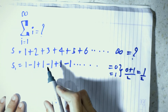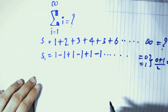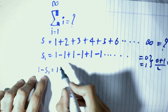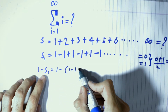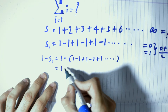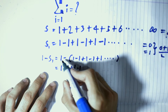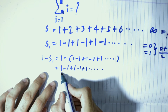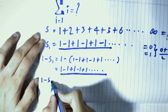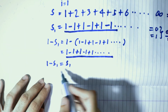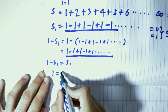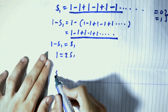Don't worry if you don't believe that 1 minus 1 plus 1 minus 1 and so on equals 1 by 2, because we can prove it. We write 1 minus S1. S1 was 1 minus 1 plus 1 minus 1 plus 1 and so on. Opening the bracket, we get 1 minus 1 plus 1 minus 1 plus 1 minus 1 and so on, which is S1 itself. So 1 minus S1 equals S1, giving us 2S1 equals 1, therefore S1 equals 1 by 2.